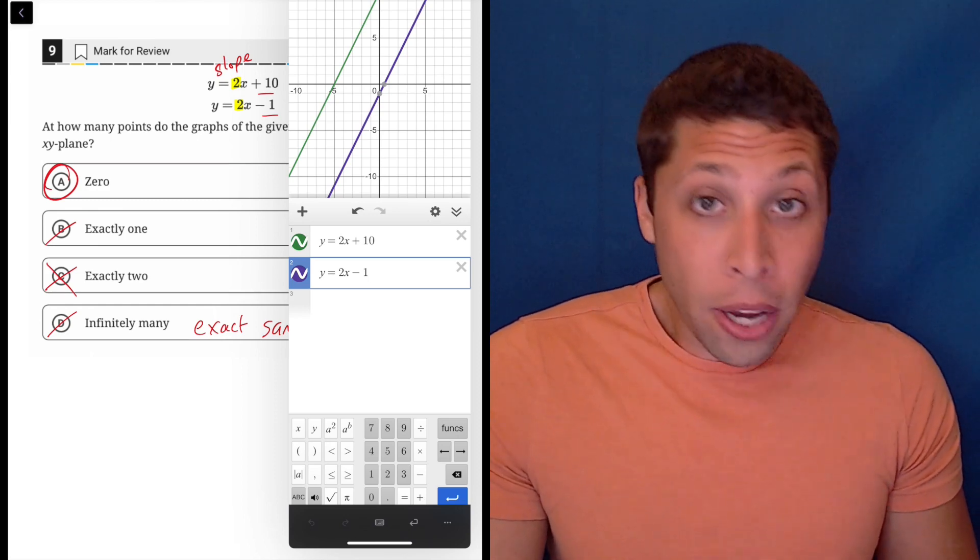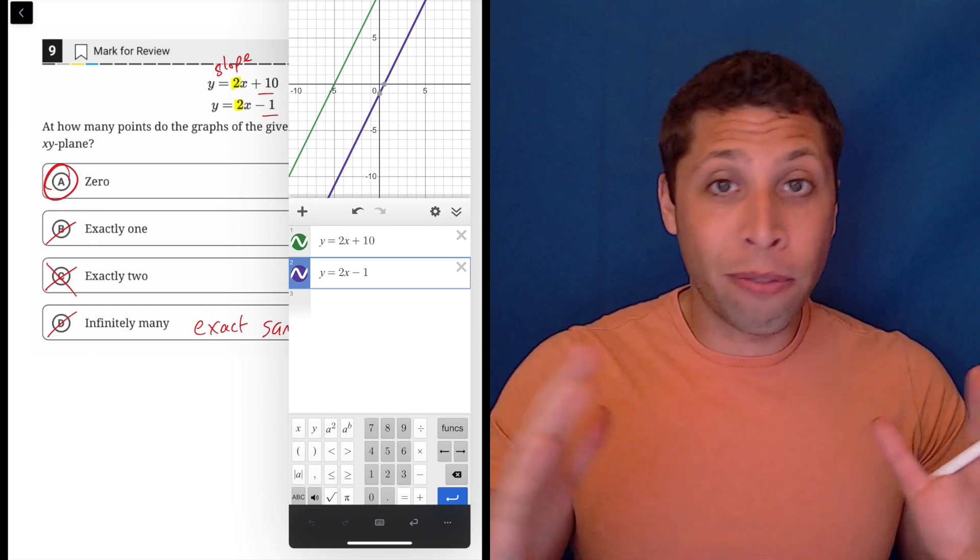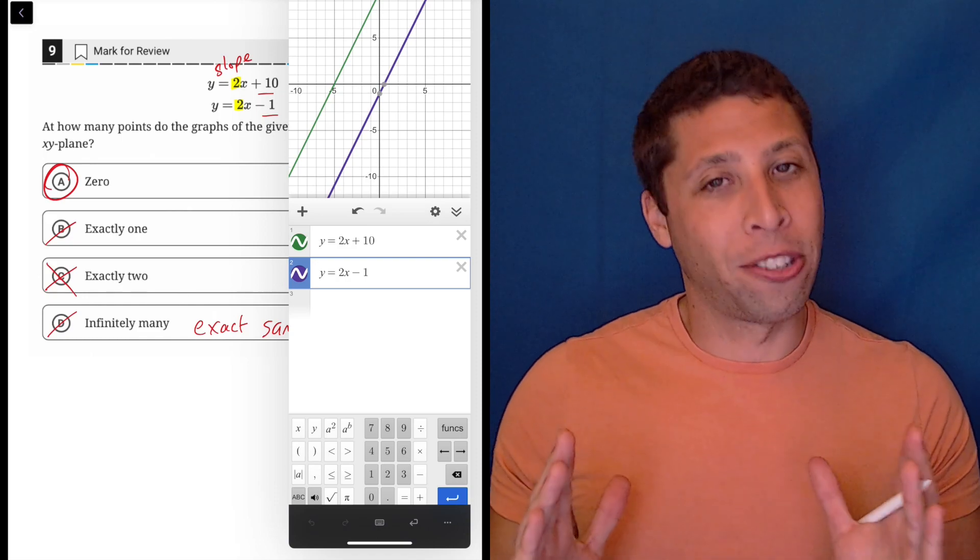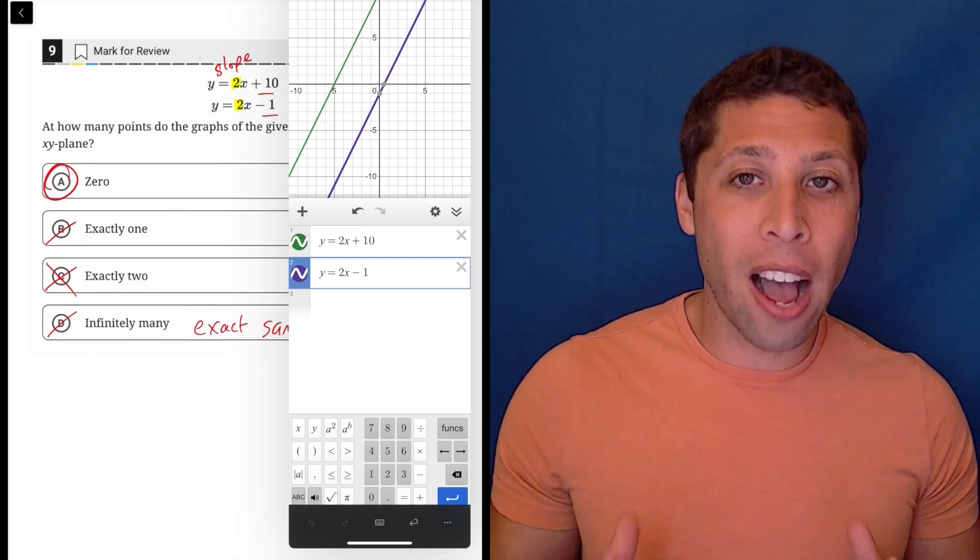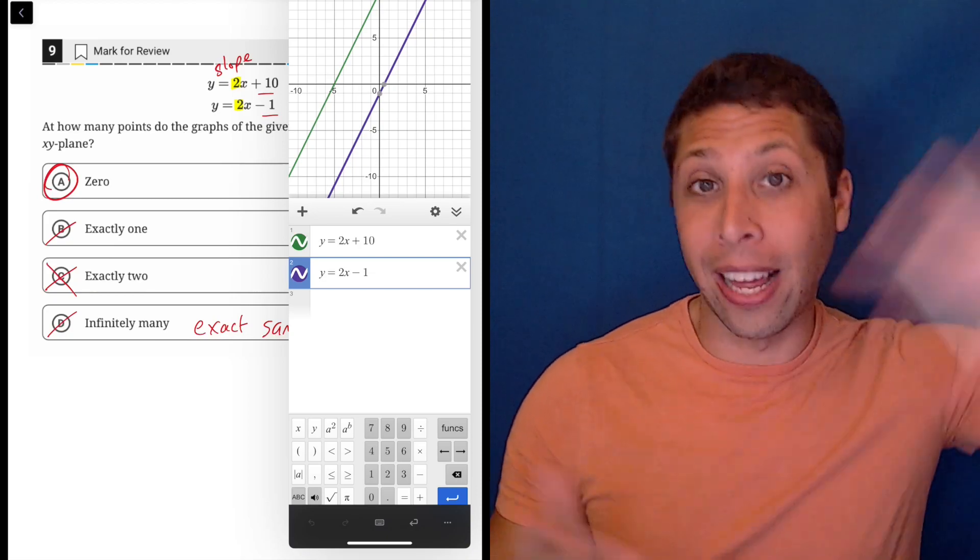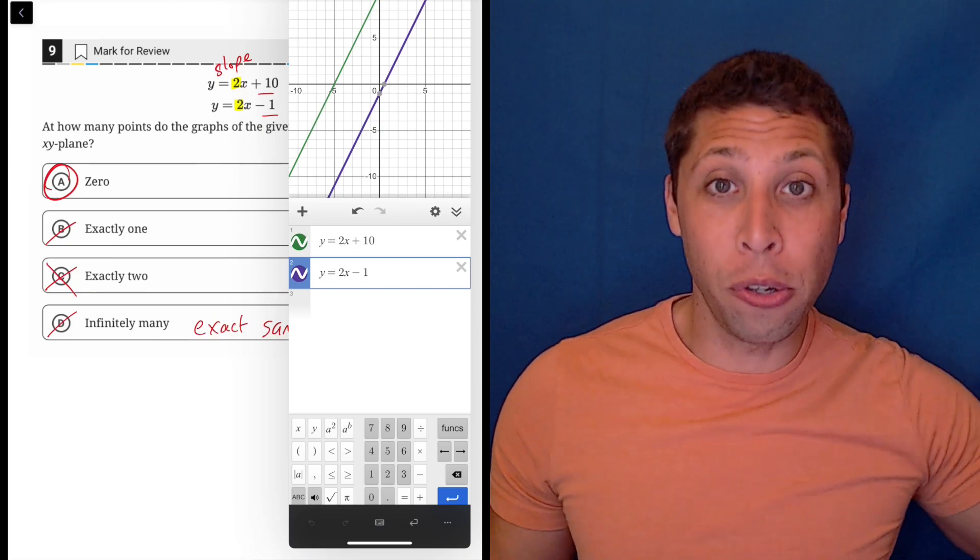Now, in theory, it's possible that they curve very slightly or they, I should say, I shouldn't say curve, that the slopes are slightly different enough that they do intersect at some point, like, you know, far away from where I'm zoomed,